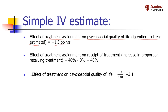In this particular study, the intention-to-treat estimate came out to be 1.5 points — those randomized to integrated care had 1.5 points higher psychosocial quality of life than those randomized to control. Our denominator is the effect of the instrument on the exposure: how much more likely were you to receive treatment if randomized to the treatment group rather than control? It turns out that 48% of those randomized to the treatment group actually received integrated care versus 0% in the control group, so the difference is 48%.